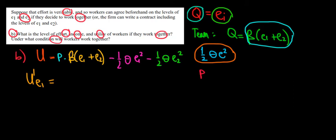We have p times beta times e1, so we're left with p times beta. On the second term, we have everything related to e2, but we're differentiating with respect to e1, so that derivative is just zero.